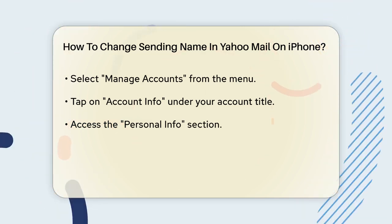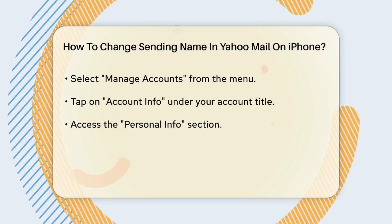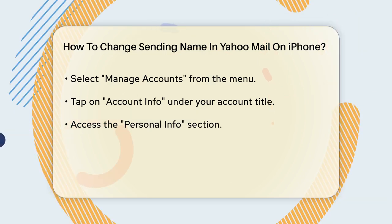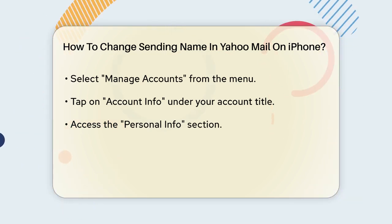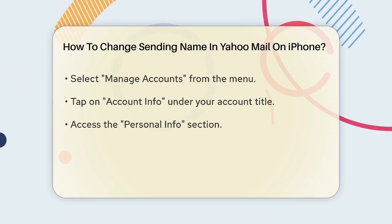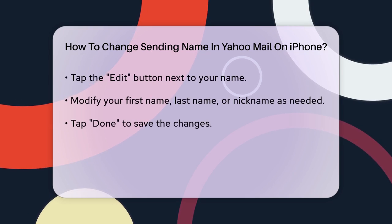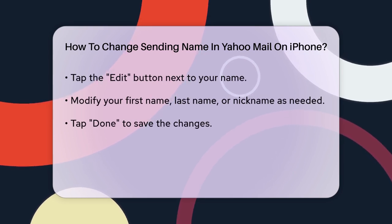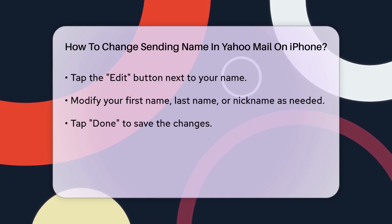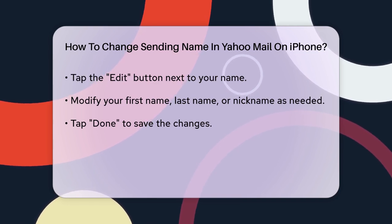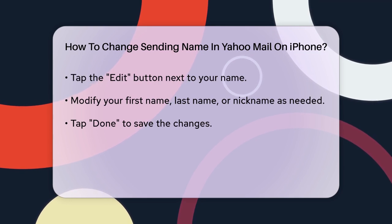Here, you'll find the option to edit your personal information, including your name and nickname. Tap on the Edit button next to the name you want to change. Now, you can edit your first name, last name, or nickname. Simply tap on the field you want to change and type in your new name. Once you've made the changes, tap Done to save your new details.